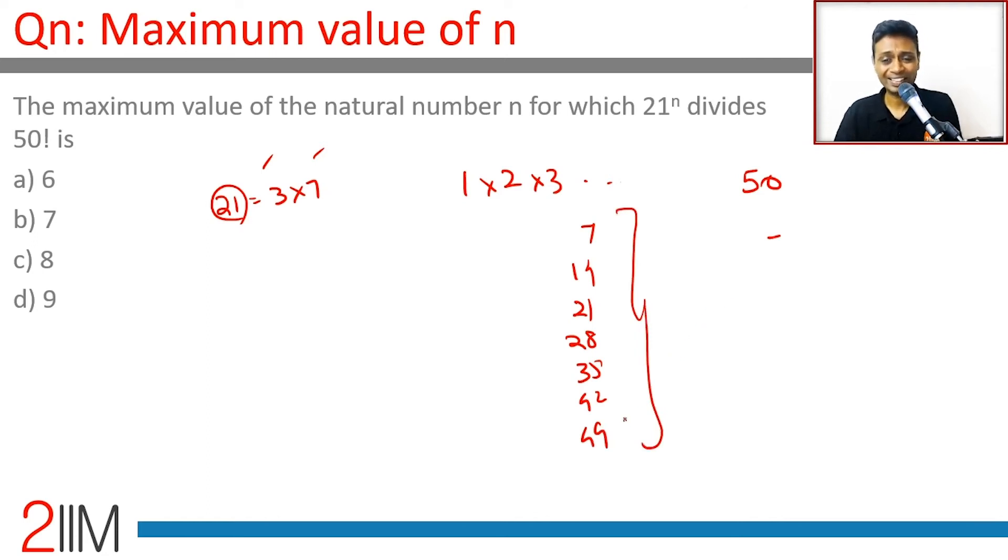Within these, this 49 will give us 2 sevens. 49 itself is 7 squared. So 7^8 divides 50 factorial.